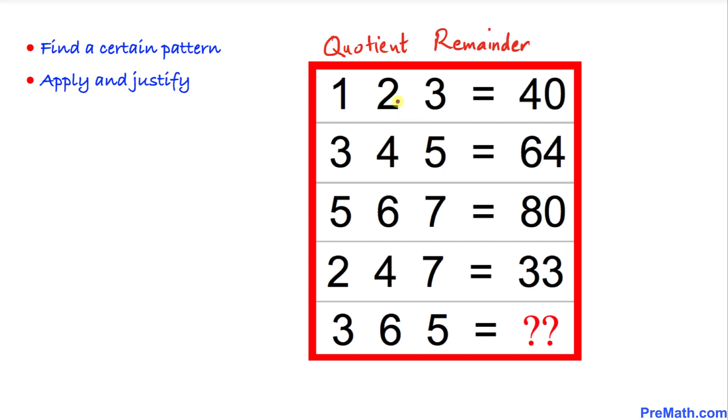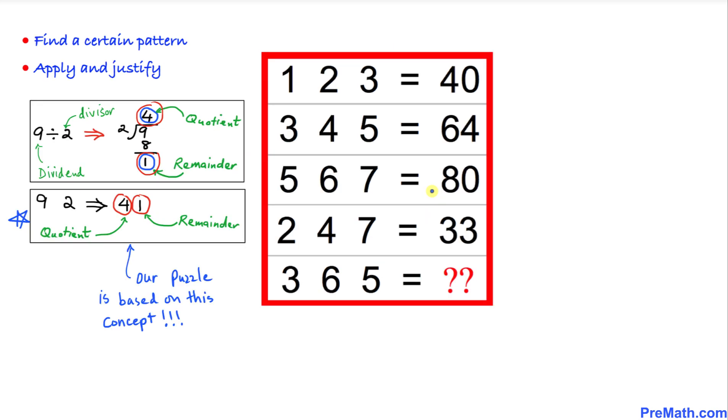Before we proceed, let's talk about the quotient and remainder concept. Here's a very simple example: nine is being divided by 2, and then we can see that when we divide we are going to get 4 as a quotient and 1 as a remainder.